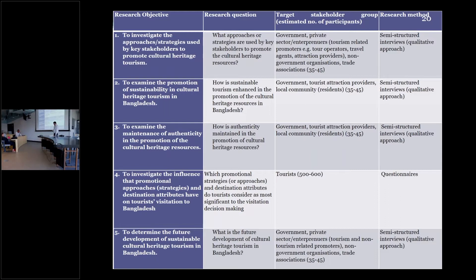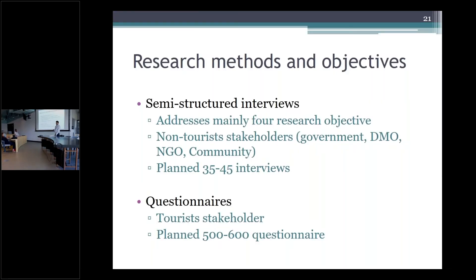My first objective uses a qualitative approach — semi-structured interviews — to investigate how key stakeholders, including government, NGOs, tourist operators, and local community, promote cultural heritage tourism. The second objective also uses semi-structured interviews to examine how sustainable tourism enhances the promotion of cultural heritage tourism in Bangladesh. I plan to conduct 35 to 45 interviews with high-ranking government officials and NGOs. I am also planning a questionnaire targeting 500 to 600 tourists, both foreign and domestic.